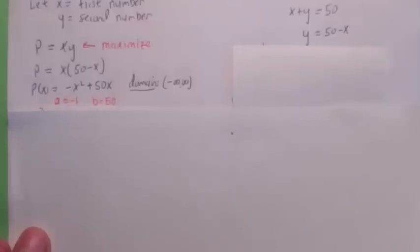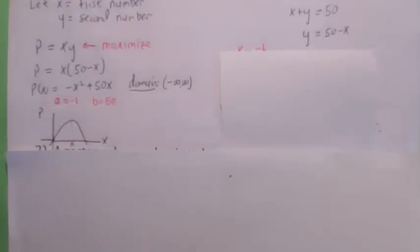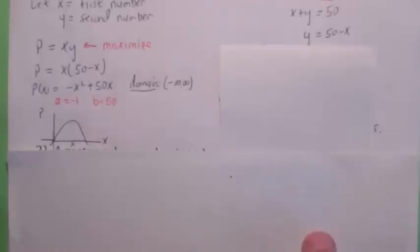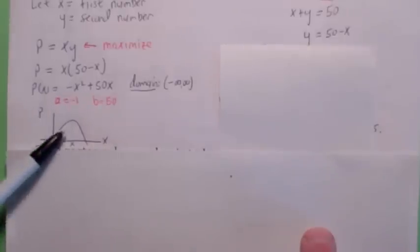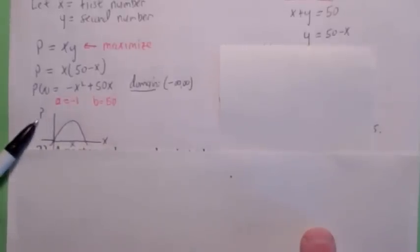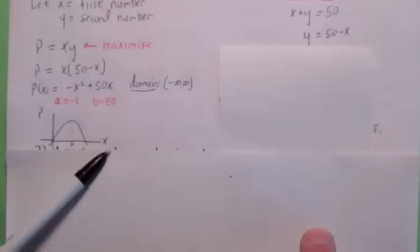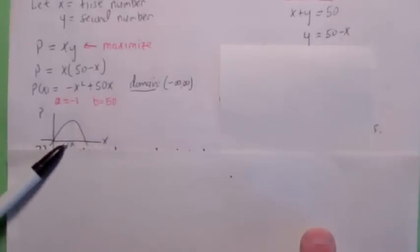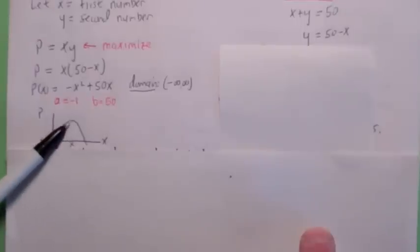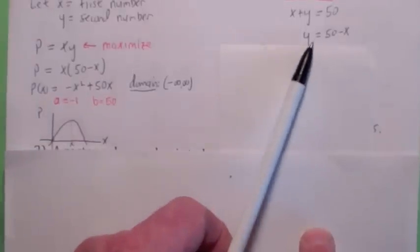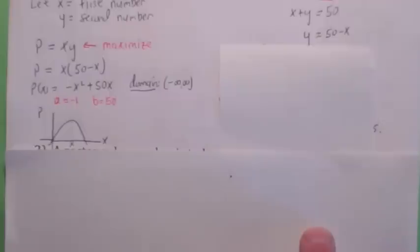In terms of the vertex, we have to note that a is negative 1, b is 50. Before we look at the vertex, let's make sure we understand exactly what's going on. This function, p of x, is the product written in terms of one of the numbers. So when it asks what are the numbers that give a maximum product, if you find the x coordinate of the vertex, that would give you the value of x that makes the product maximum. And then to find the other number, you'd plug into the constraint equation.